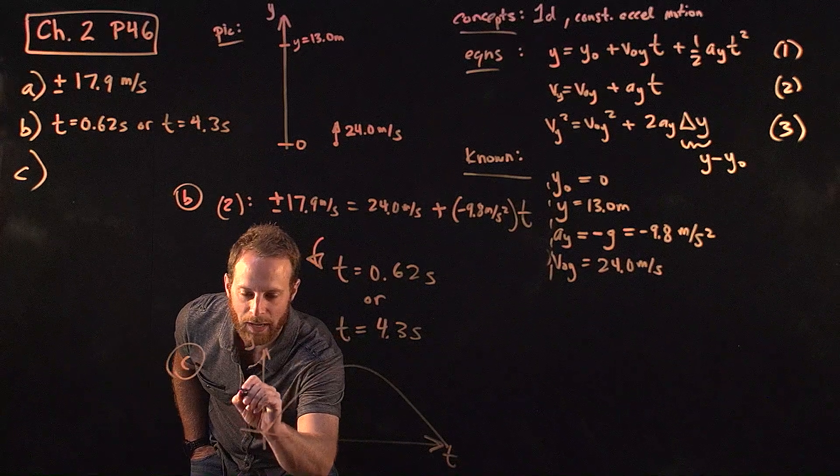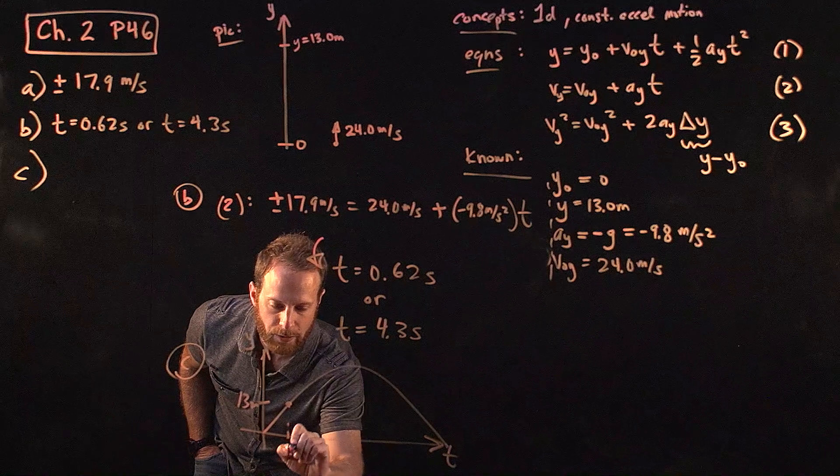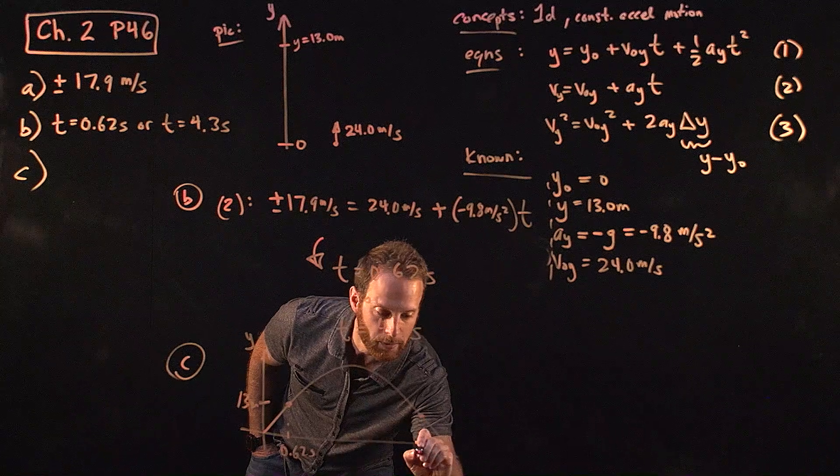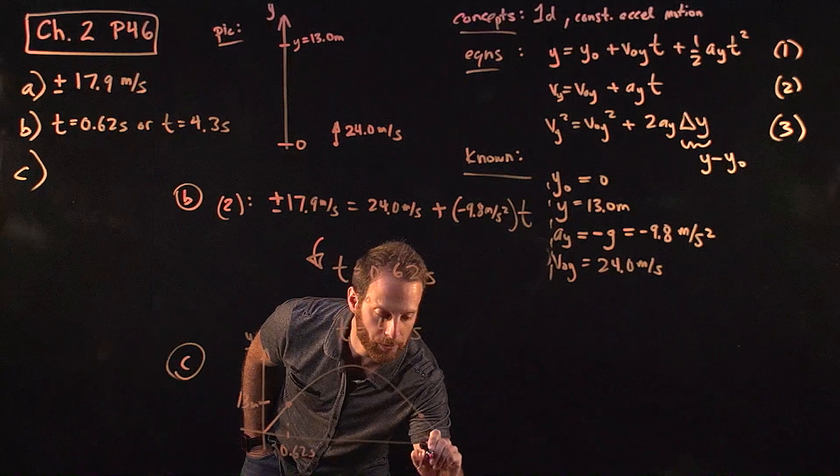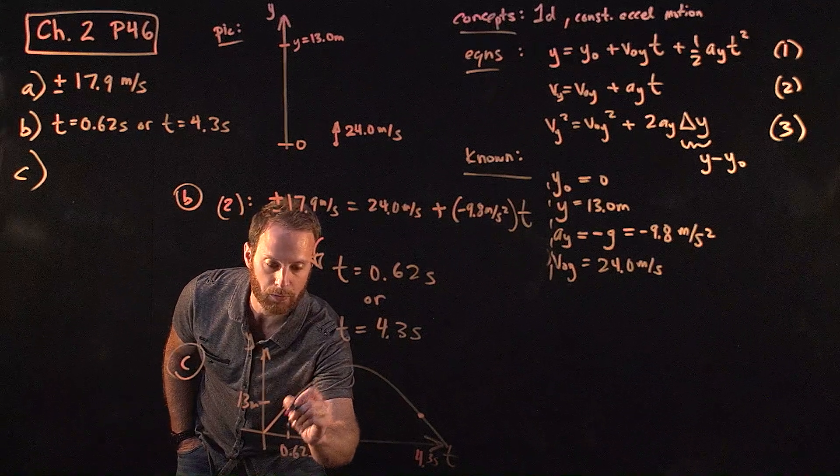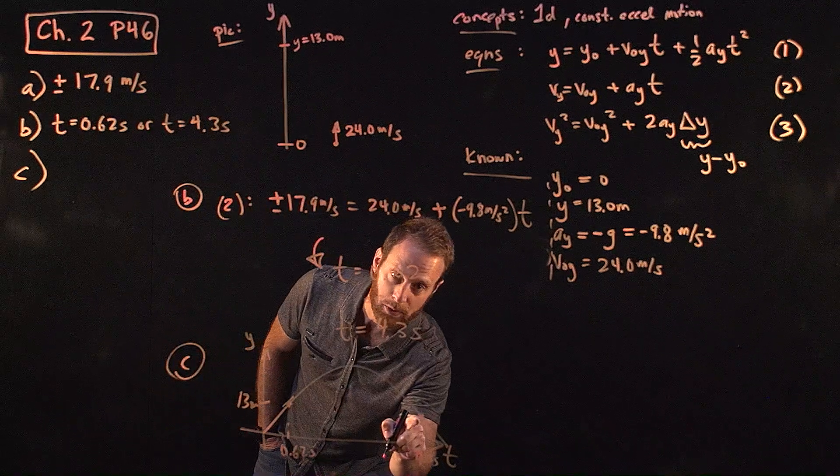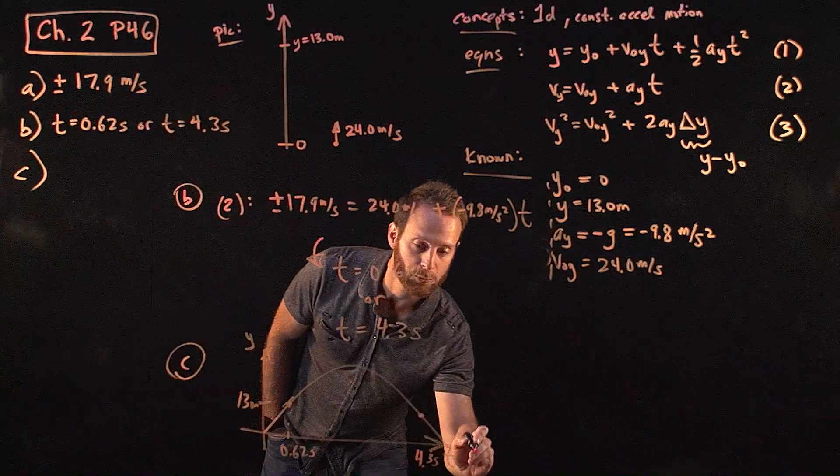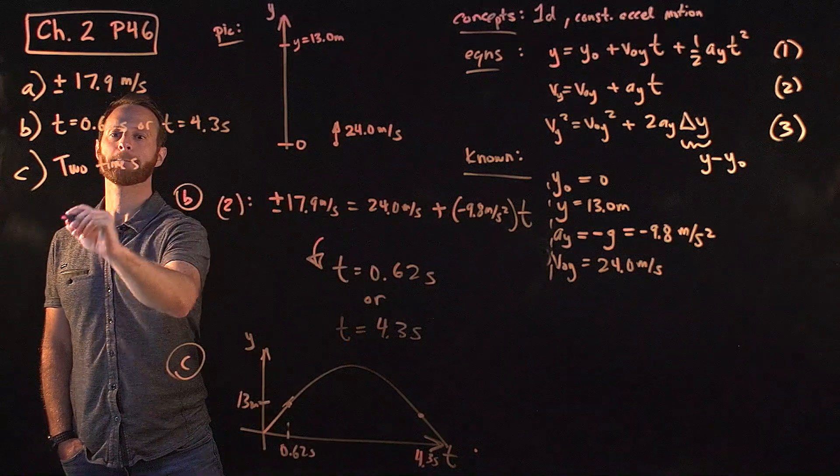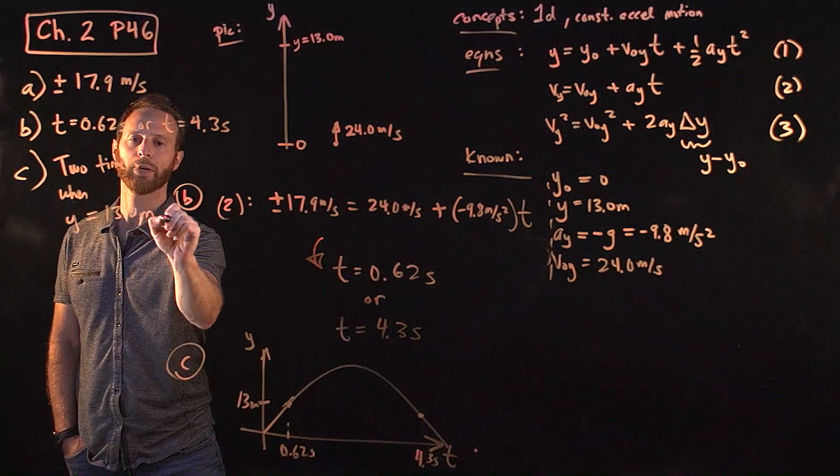And at, let's say, this height of 13 meters, the stone will pass that height at 0.62 seconds on its way up, and then on its way down again, it'll pass that point at about 4.3 seconds. So you'll notice here the slope of the y versus T graph is positive, so the velocity is positive here. That corresponds to the plus solution, and the slope of this graph is negative, corresponding to the minus solution. That's why there are two solutions, because there are actually two times when y is equal to 13.8 meters.